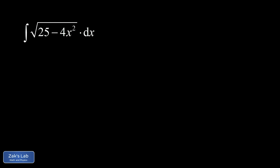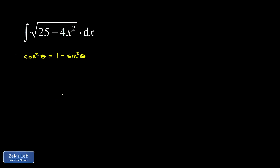What we see inside that square root is a constant minus a variable thing squared. The trig identity we're targeting is cosine squared theta equals 1 minus sine squared theta — on the right hand side we have a constant minus a variable thing squared. So we're going to make a sine substitution for x, but we also have to take care of these constants: the annoying 25 instead of 1, and the 4 stuck onto the x squared.